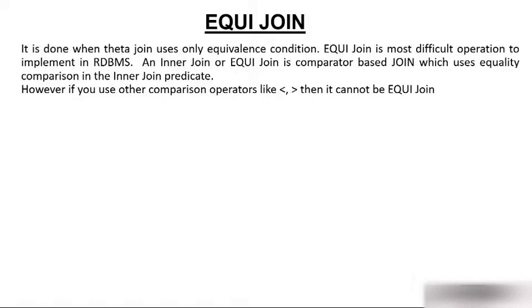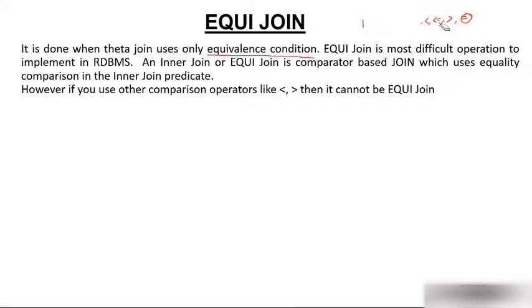What is Equijoin? As the name suggests, it is done when theta join uses equivalence condition. What is theta join? A theta join is represented with a join symbol and a theta symbol, and this theta could be anything — it could be less than, less than equal to, greater than, or equal to. But when we use only the equal-to condition, then we are using Equijoin. It is done when theta join uses only equivalence condition.